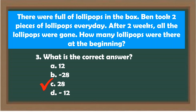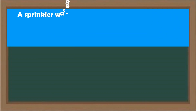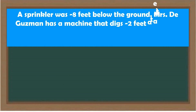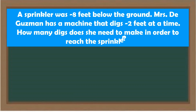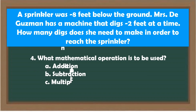The answer is letter C — positive 28. Ms. Guzman has a machine that digs negative 2 feet at a time. How many digs does she need to make in order to reach the sprinkler? Number 4 — what mathematical operation is to be used? A. Addition. B. Subtraction. C. Multiplication. D. Division.